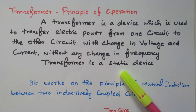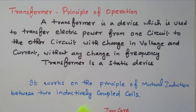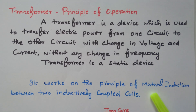A DC motor or generator is a rotating device, whereas the transformer comes under the static device category. It works on the principle of mutual inductance between two inductively coupled coils. The important parameter is the mutual inductance between the two coils.